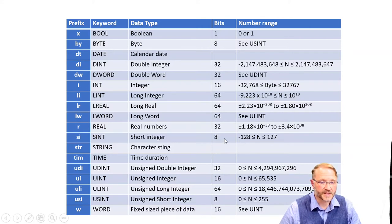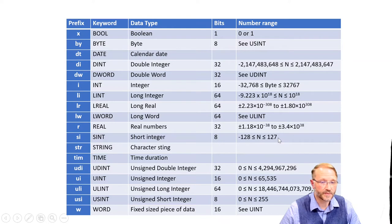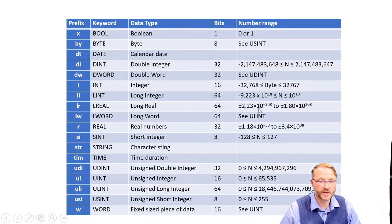Don't forget the signed data types. For example, the short integer will hold numbers between negative 128 and 127. We also have the reels — a reel that's 32-bit, and then a long reel that's 64-bits. You can see how large those decimal numbers can be.